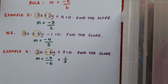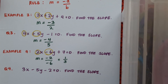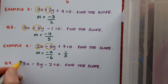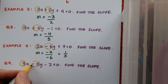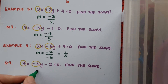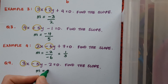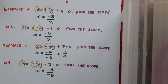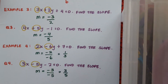Now a question for you: 3x minus 5y minus 2 equals 0. Find the slope. Pause the video, give it a bash, then play and see if you're correct. Looking at the x and y coefficients: a equals 3, b equals minus 5. So m equals minus 3 over minus 5, and tidying that up: the two negatives cancel, giving 3 over 5. The slope is 3 over 5.